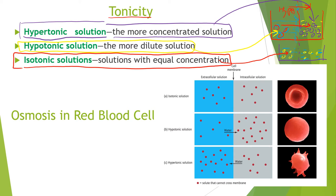Solvent always flows from hypotonic to hypertonic. In isotonic solutions — where both solutions separated by a membrane have equal amounts of solute — there is no net flow of solvent. The solvent molecules may move left to right or right to left, but overall there is zero net flow.